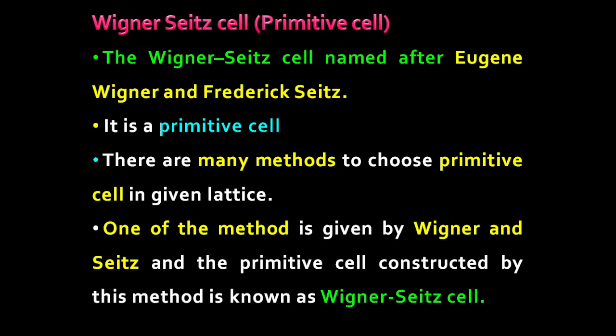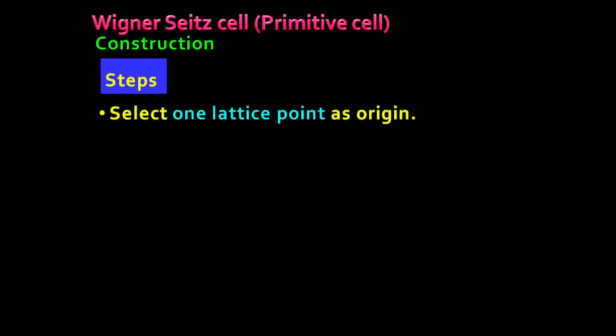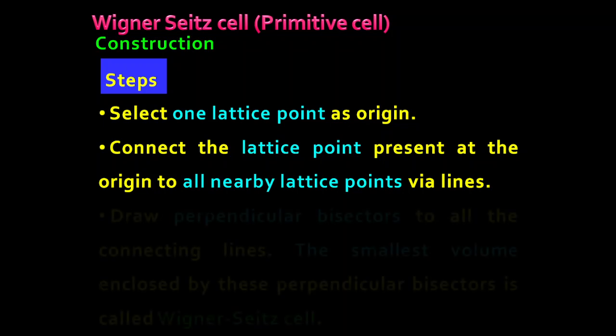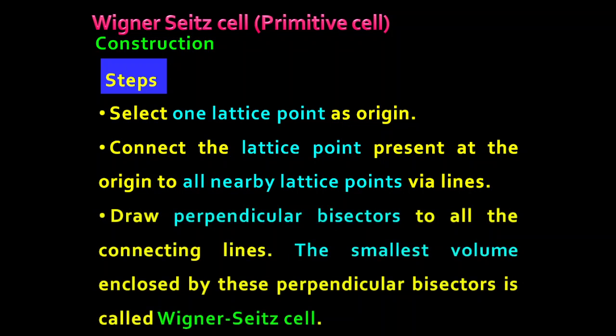There are a few steps to follow to construct the Wigner-Seitz cell. The first step is to select one lattice point as an origin, then connect that origin to all nearby lattice points via lines, draw perpendicular bisectors to all those connecting lines, and the volume enclosed by these perpendicular bisectors is called the Wigner-Seitz cell. I have quoted these steps on this slide.